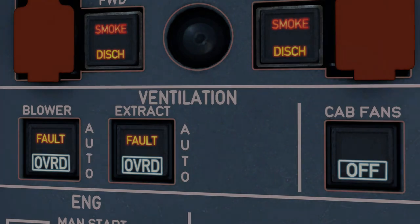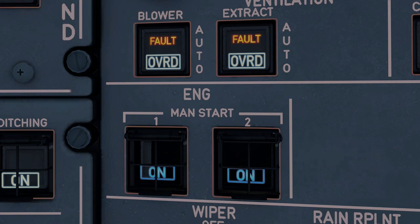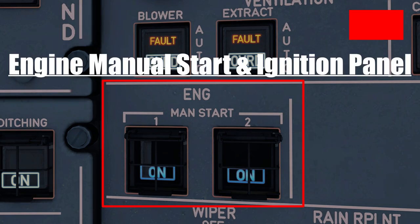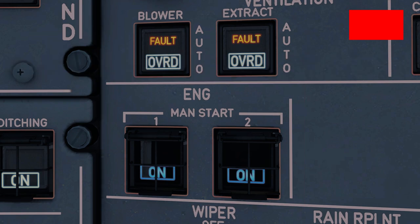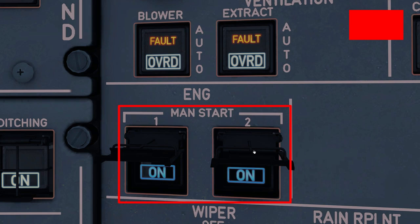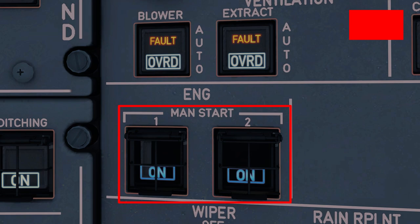The final panel on the right-hand column is the engine manual start and ignition panel. This houses two manual engine start buttons for both engines in case flight crew need to start them manually — a fairly common procedure during high-altitude terrain operations. The A320 family is highly automated, with onboard systems regulating valve operations during engine start, all of which are inhibited during manual start. If the proper engine start criteria is met, pilots can push these buttons to start both engines, though in a sim-based environment these switches are rarely used.